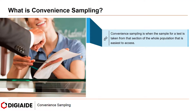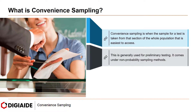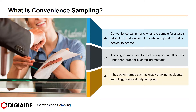Convenience Sampling is when the sample for a test is taken from the section of the whole population that is easiest to access. This is generally used for preliminary testing. It comes under non-probability sampling methods. It has other names such as Grab Sampling, Accidental Sampling, or Opportunity Sampling.